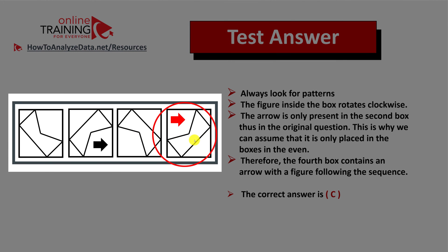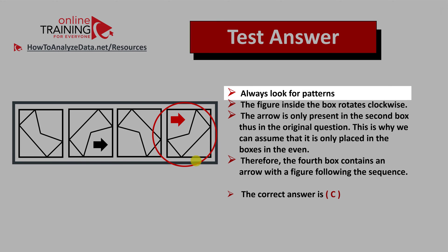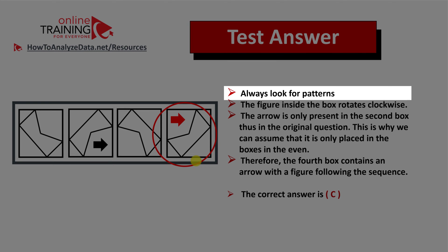And here's the answer. The fourth box in the sequence is now populated. But let's go through the logic and rationale so you would know how to answer similar questions in the test. Number one tip, and always a tip, is to always look for patterns.